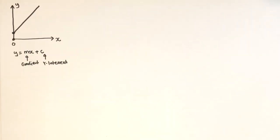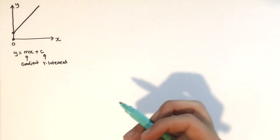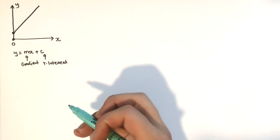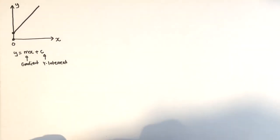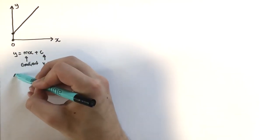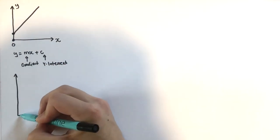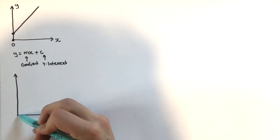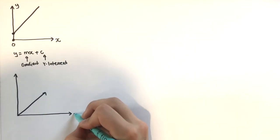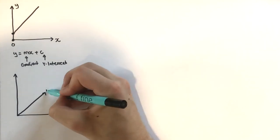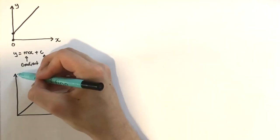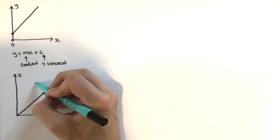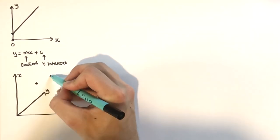But how do we incorporate vectors into this? How can we represent the same line only in terms of vectors? Let's draw out our axes again — this time we're going to go into three dimensions. So we've got an x-axis, a y-axis, and a z-axis, and let's take two points in 3D space.